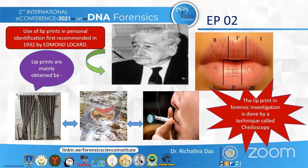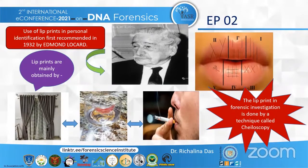The use of lip prints was first documented in 1932 by Dr. Edmund Lockhart, who was a French criminologist and was the first person to recommend the use of lip prints. Lip prints are basically the impressions of the human lips which are left on objects like cigarettes, glasses, drink containers, curtains, or windows.